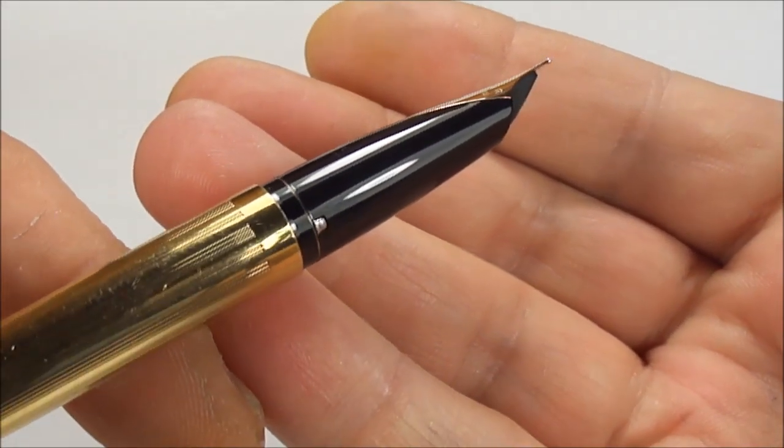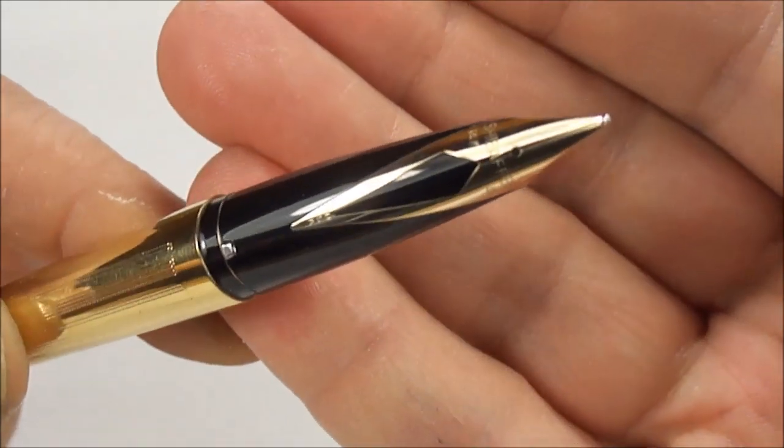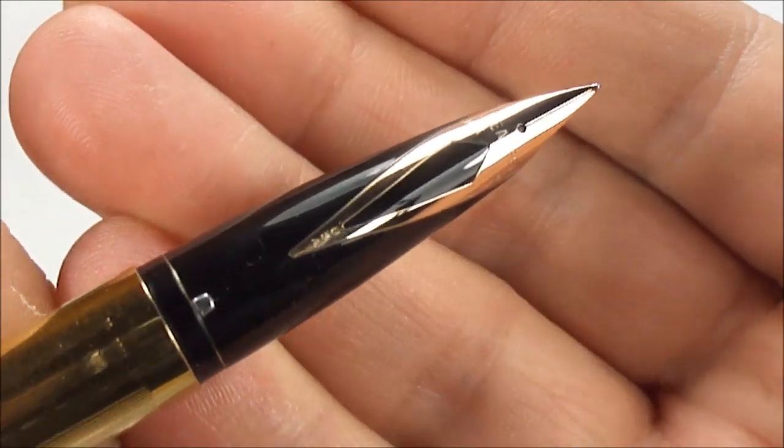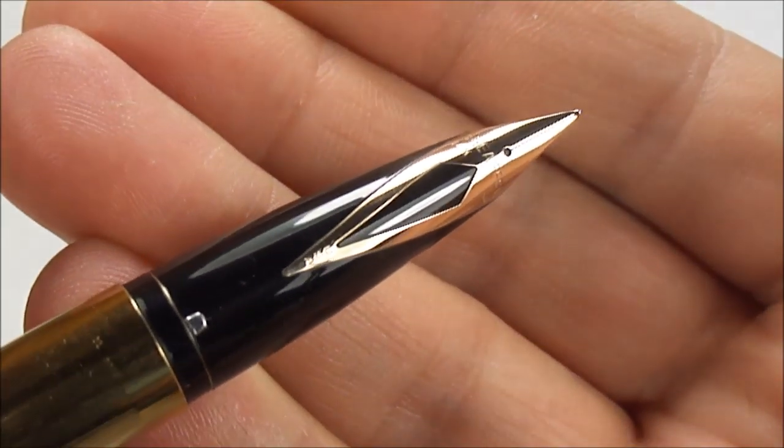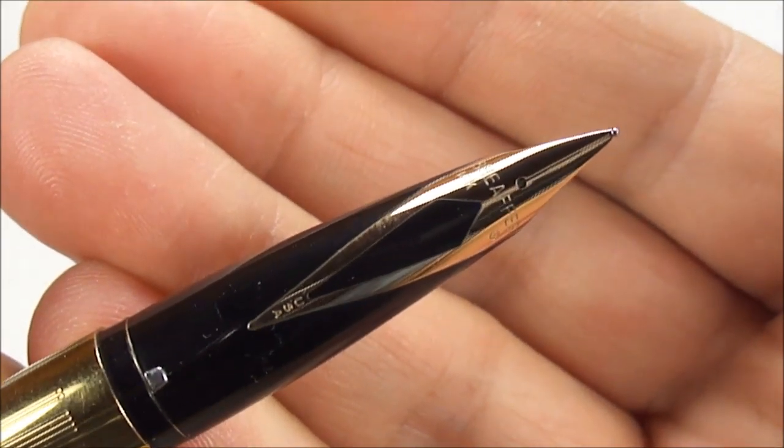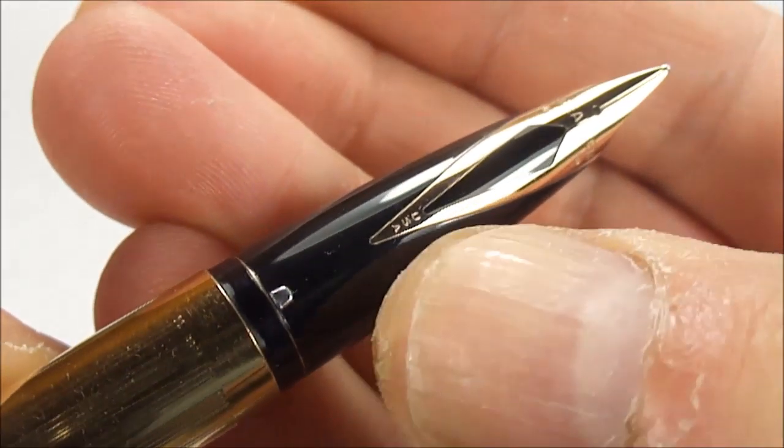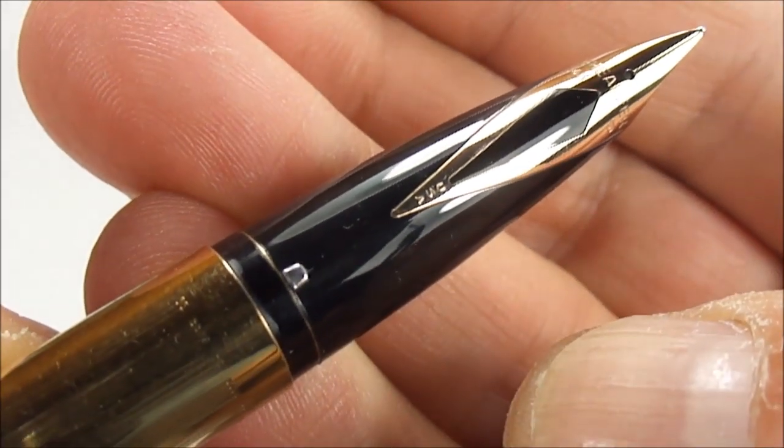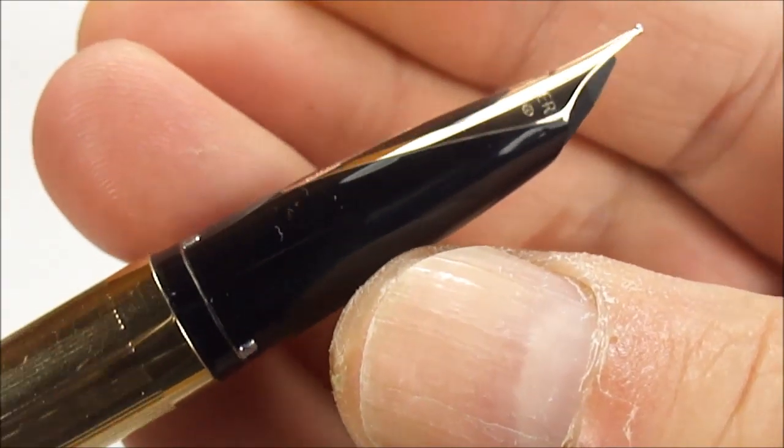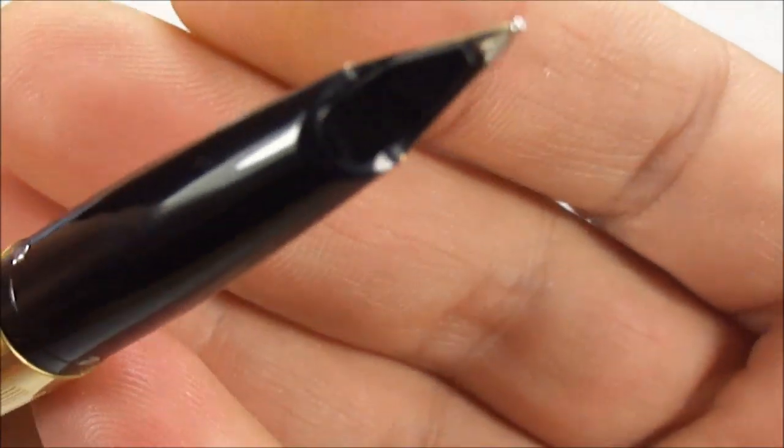You can see the section there. We've got this black section with the inlaid Schaefer nib there. If we bring it a little bit closer, a little bit difficult to show you with it being gold, the imprint on the nib reads Schaefer 14 carat, and then just to the bottom there you can see it's got USA. So as it says, the pen was made in USA.